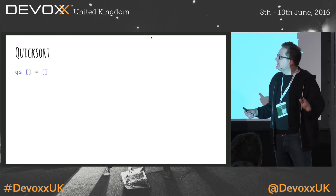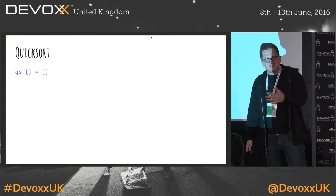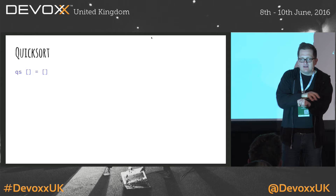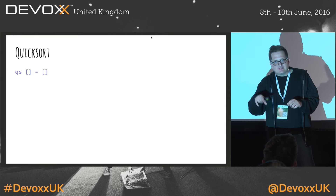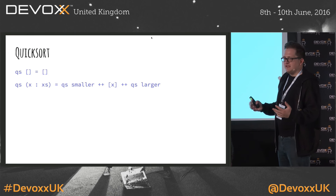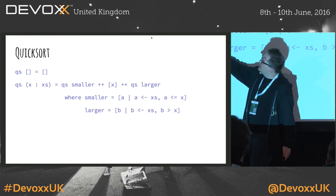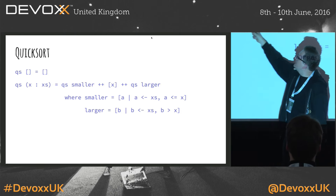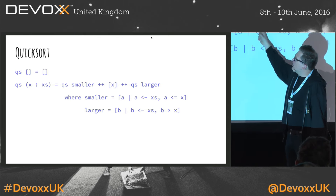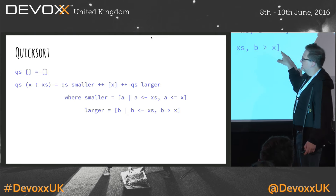Quick sort. The very easiest definition: if the list is empty, return an empty list. If it's not, take the first element, put it in the middle, take every other element in the list — everything smaller, put it on the left and do a quick sort on it; everything larger, put it on the right and do a quick sort on it. This is the definition of quick sort in Haskell — exactly what I just said. If it's an empty list, return empty list. If it's a list that has some element and a tail, put that element in the middle, take everything smaller and run quicksort on it, and take everything larger and run quicksort on it as well. And it just works.